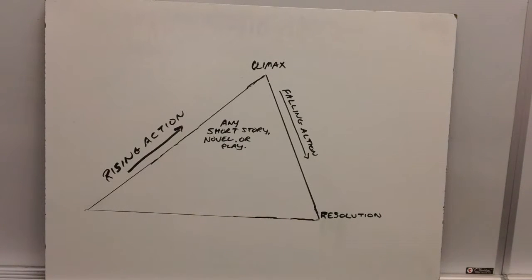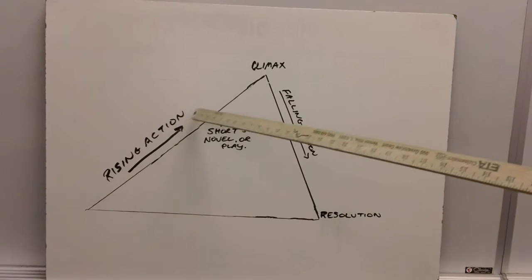Now, most of all, a short story, novel, or play is going to follow a scalene triangle, and by that we mean a triangle without even sides. Now on the left-hand side, you're going to see the rising action. That's this right here going up, rising action.